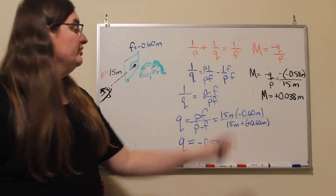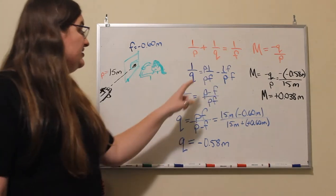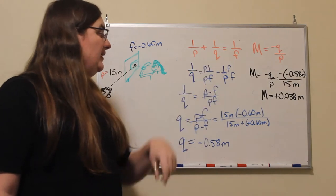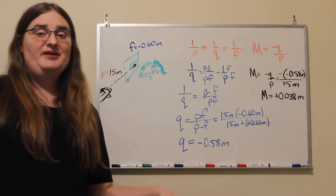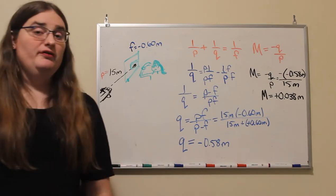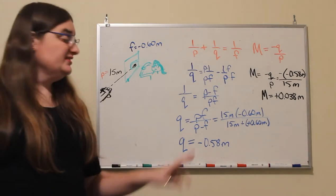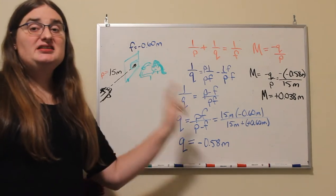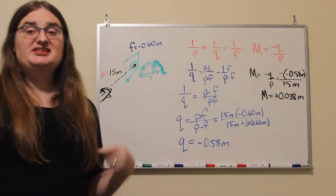And 1 over my object distance, numerator and denominator, get multiplied by the focal length. So that means my object distance minus my focal length divided by my object distance times my focal length is 1 over my image distance, or more easily, the image distance is the object distance times the focal length divided by the object distance minus the focal length.